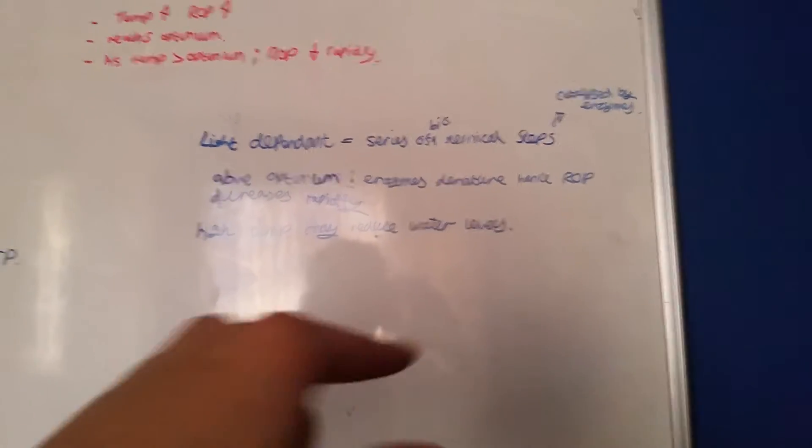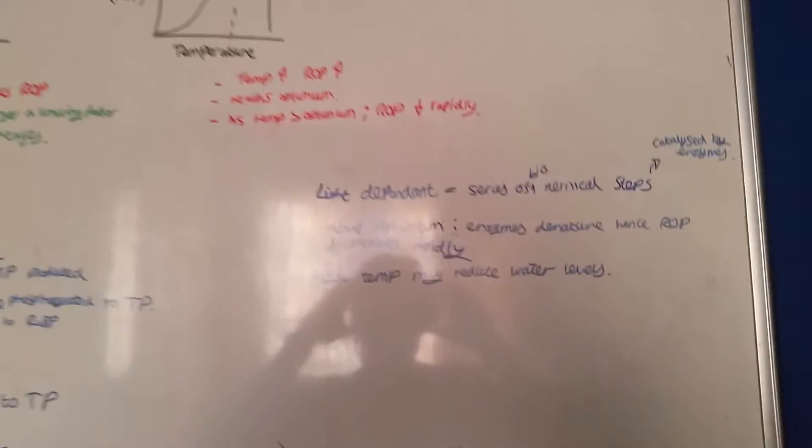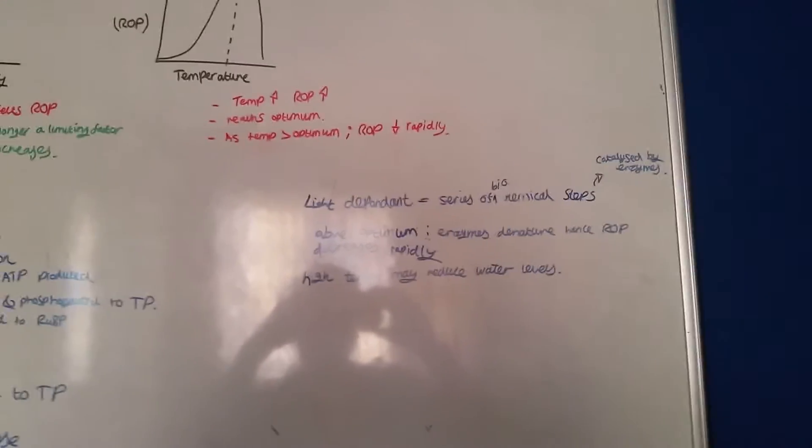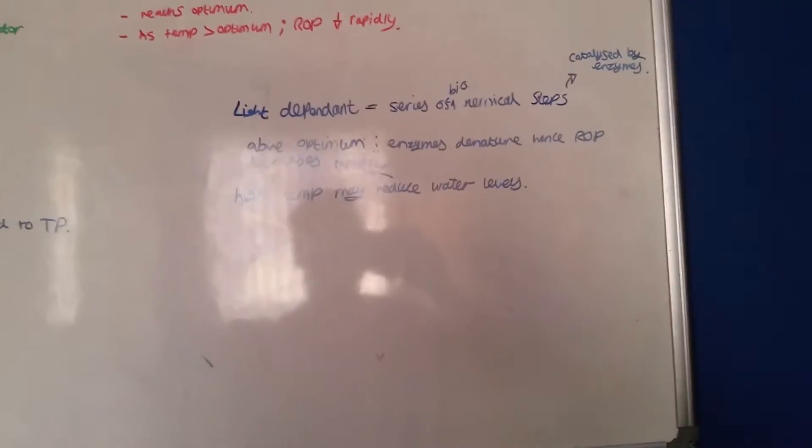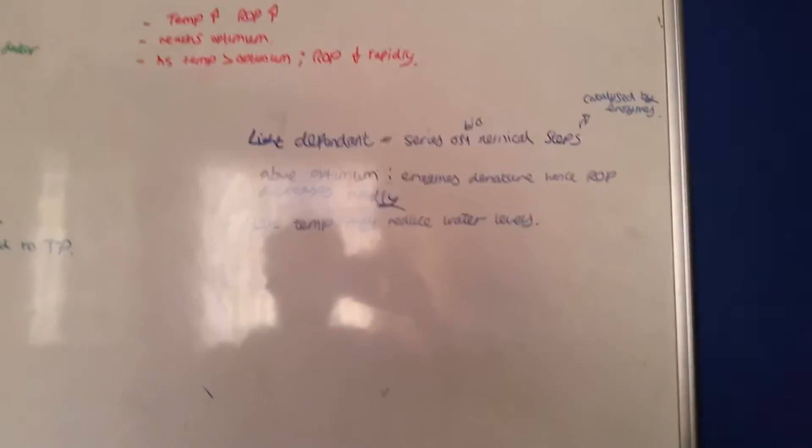Hence, rate of photosynthesis decreases. As there is high temperature, this also may reduce water levels in the plant via transpiration, evaporation, that kind of stuff.